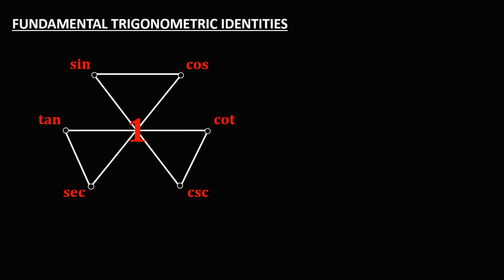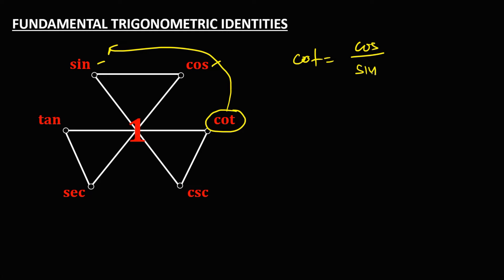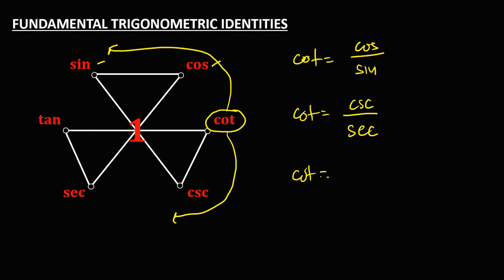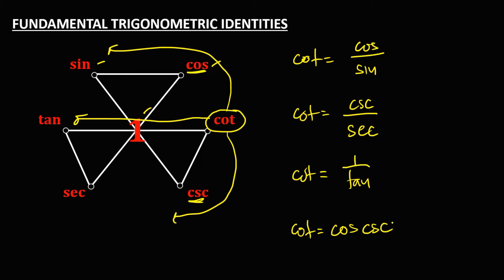If we want to find the different identities for cotangent, cotangent to this area gives us cosine over sine. Also cotangent to this area is cosecant over secant. Another identity for cotangent is 1 over tangent. And the last one for cotangent is the product of these two functions: cosine times cosecant.